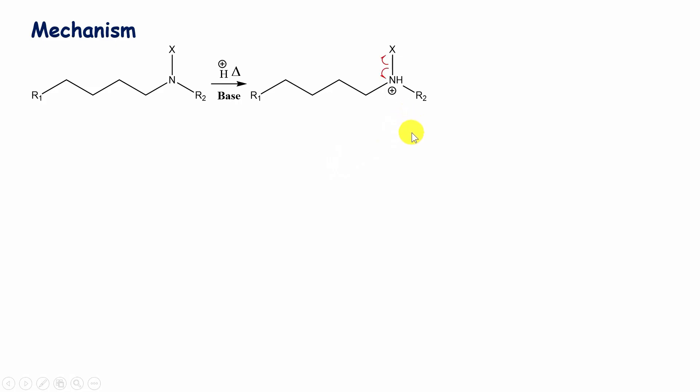Then, homolytic fission of the nitrogen-halogen bond takes place, forming halogen radical and this amine radical cation.